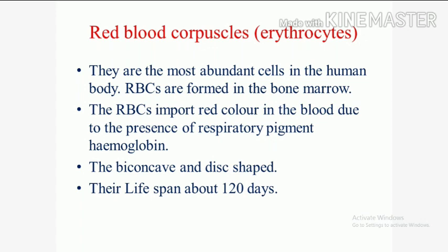Red blood cells are biconcave and disc-shaped. Biconcave means the cell has a surface that curves inward like the interior of a circle. The lifespan of a red blood cell is about 120 days.